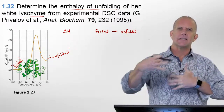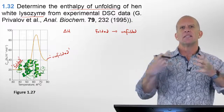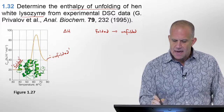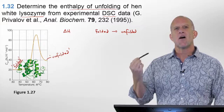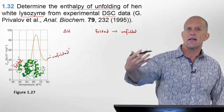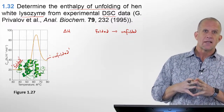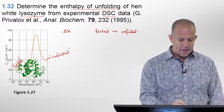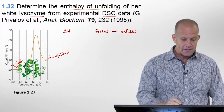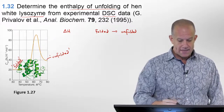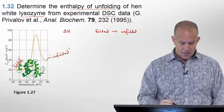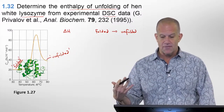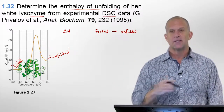Lysozyme is a very common enzyme protein that is initially studied because it's very easy to work with experimentally — it doesn't denature very easily, et cetera. DSC is a very common type of calorimetry; it stands for differential scanning calorimetry. I have separate videos on calorimetry to go through some of this in detail. The problem also gives where this data came from — figure 1.7 or 1.27 is from data from Privilof, Analytical Biochemistry, volume 79, page 232, published in 1995.